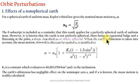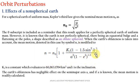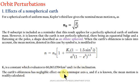Considering Earth's oblateness, the equation can be modified as: n = n₀ × [1 + k₁ × (1 − 1.5 sin²i) / (a² × (1 − e²)^1.5)], where k₁ is a constant whose value is given in problems, and i is the inclination — the angle between the orbital plane and equatorial plane. Earth's oblateness has negligible effect on the semi-major axis a, and if a is known, the mean motion can be calculated by substituting values into the equation.